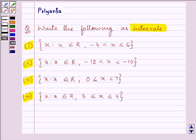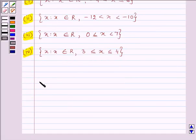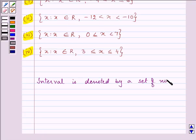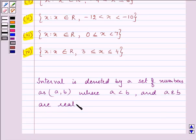Interval is a set of real numbers which is denoted by A and B. Now here A is less than B and they both are real numbers.